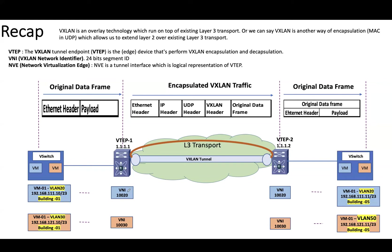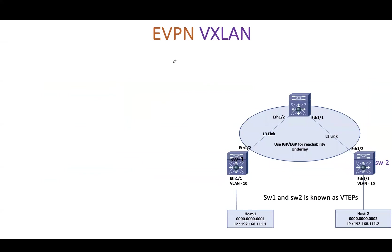There are two types of VNI: L2 VNI and L3 VNI. Please keep in mind that in a VXLAN environment, VLAN is locally significant, while VNI is globally significant. NVE is a tunnel interface which is the logical representation of the VTAP. Now let's start with EVPN VXLAN. EVPN VXLAN is a combination of EVPN and VXLAN.